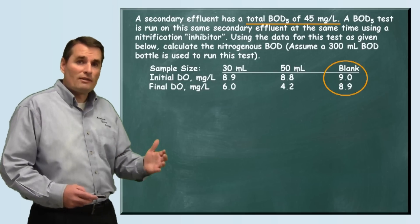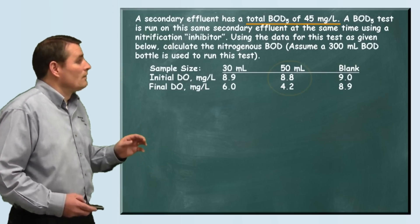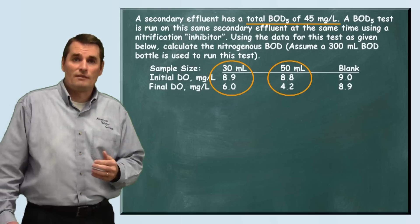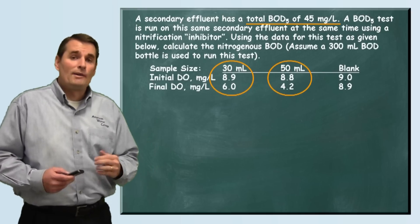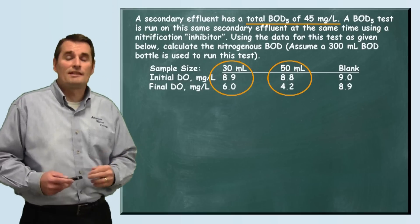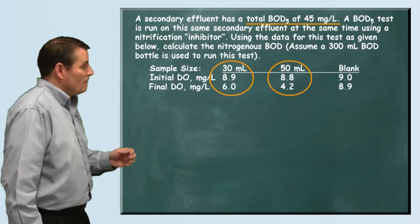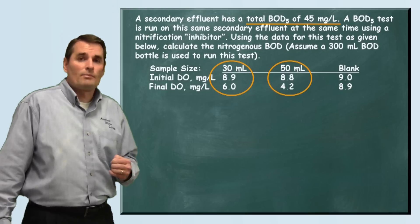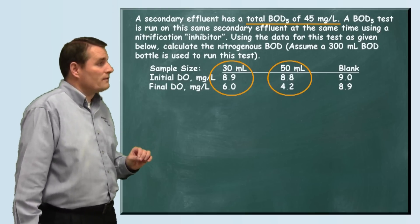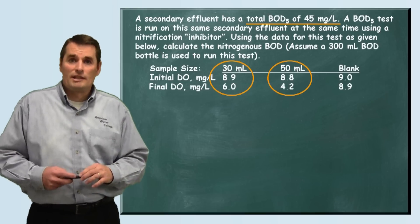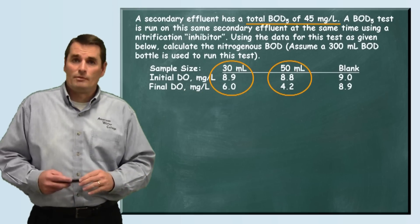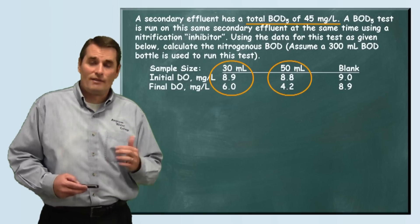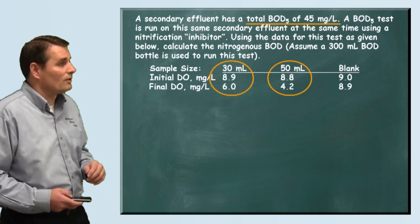Now we have to look at each individual bottle to see if it meets the other two criteria. When we look at the 50 mL and the 30 mL samples, we need to see at least a 0.2 milligrams per liter dissolved oxygen depletion from beginning to end, and we also have to have at least 1 milligram per liter left in the bottle at the end of the test. Looking at this data, both the 30 mL and the 50 mL have depleted 0.2 milligrams per liter, and there's at least 1 milligram per liter of dissolved oxygen left in each. So we're going to use both sample bottles. We'll calculate the 30 mL sample BOD, then the 50 mL sample BOD, add them together, and divide by 2 to find the average. Then we can subtract that from our total, and we'll have our answer.